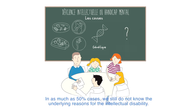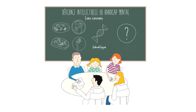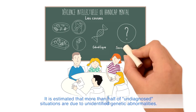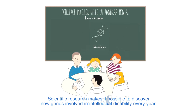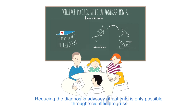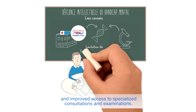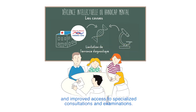In as much as 50% of cases, we still do not know the underlying reasons for the intellectual disability. It is estimated that more than half of undiagnosed situations are due to unidentified genetic abnormalities. Scientific research makes it possible to discover new genes involved in intellectual disability every year. Reducing the diagnostic odyssey of patients is only possible through scientific progress and improved access to specialized consultations and examinations.